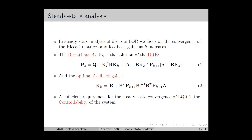In the steady state analysis of discrete LQR, we are interested in the convergence of the Riccati matrices and feedback gains for LQR with large time horizon. The LQR problem in which the time horizon n tends to infinity is called the infinite horizon discrete LQR. In this lecture, we discuss the convergence of the Riccati matrix pk and the feedback gain k.